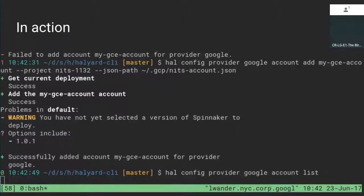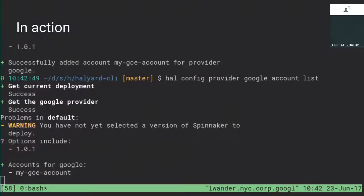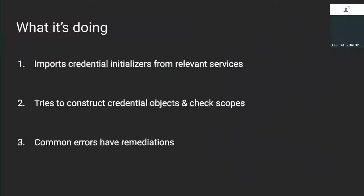Verified — I list the accounts and my GCE account was added. What it's doing here is taking the part of the code in the jar from each service that tries to instantiate credentials for Spinnaker, porting it into Halyard, and actually using that to try to instantiate your credentials. If that succeeds, you're already on the right track. Then it tries to use these to do simple things like listing some regions, checks IAM scopes, and makes sure that when this thing actually runs, you're not going to accidentally break some part of your production Spinnaker.